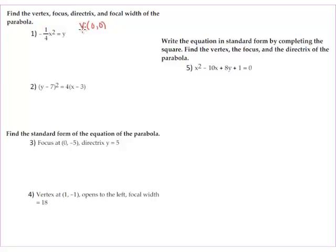Once you know that, you look at your table for a vertex-at-zero-zero parabola. We want x squared to be by itself, so I need to start by multiplying both sides by negative four to get rid of the fraction on the left side. That makes it x squared on one side and negative four y on the right. What's in front of y is four p, so four p equals negative four, which means p equals negative one.